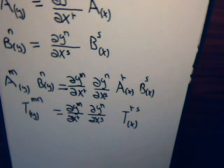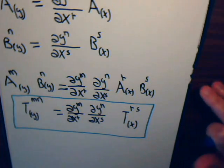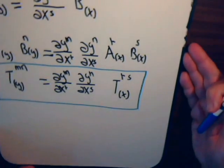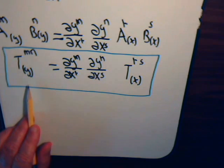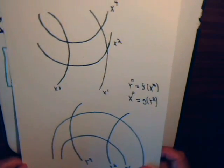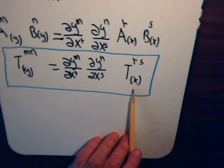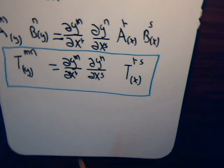This is video number four in our series on topics in tensor analysis. In the previous video we had left off with an equation that shows how a contravariant tensor transforms from an X coordinate system to a Y coordinate system. Here was a vector in the X coordinate system with components R and S, and here are the corresponding components in the Y coordinate system.